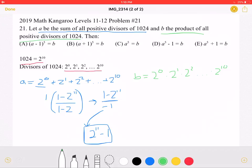And because they all have the same base of 2, we can just add the exponents. The numbers 0 plus 1 plus 2 plus 3 plus 10 would add up to 55, which means that B must be equal to 2 to the 55th power.